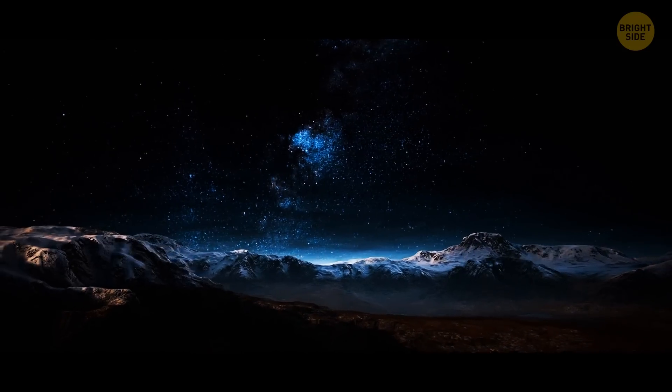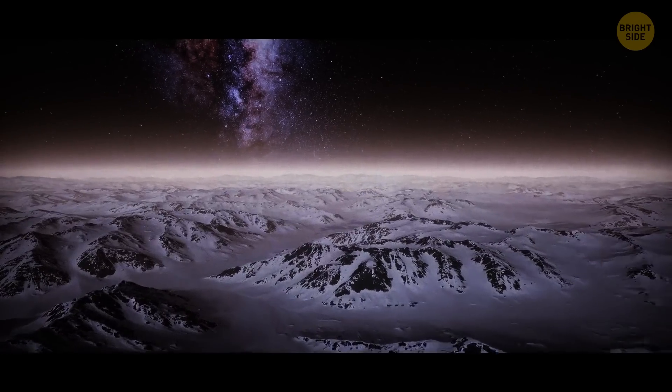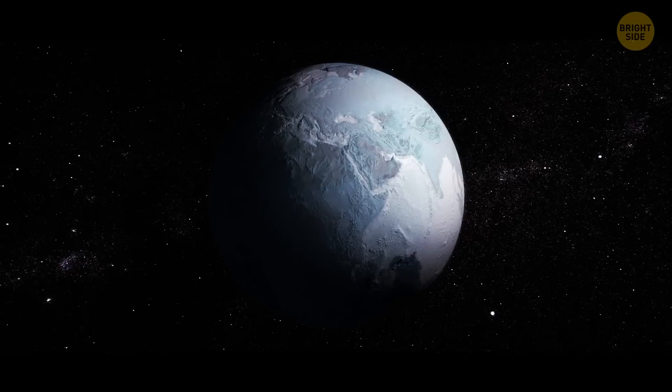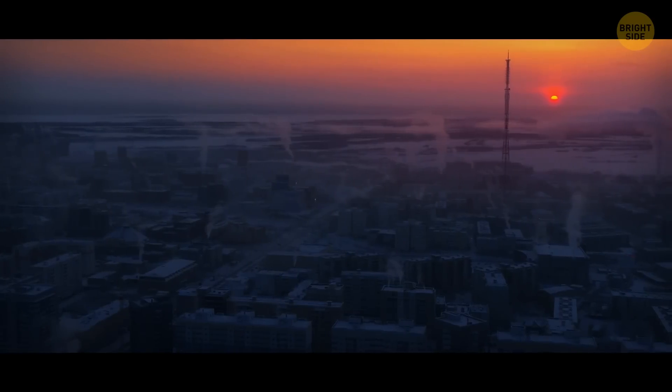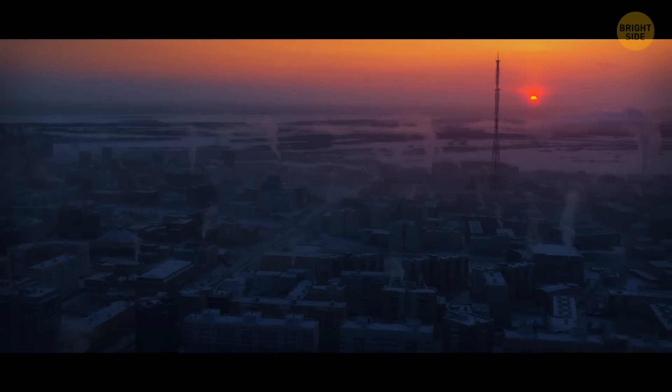Picture a place where the Sun doesn't shine anymore. Dark, cold, covered in ice and snow all year round. That would be our Earth if it traveled further from the Sun. If this happened, our cities would start to look very different.